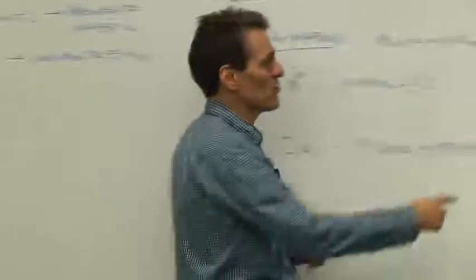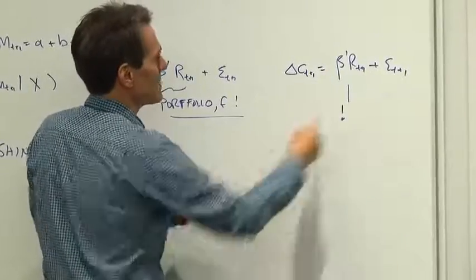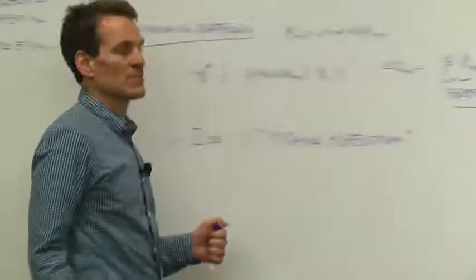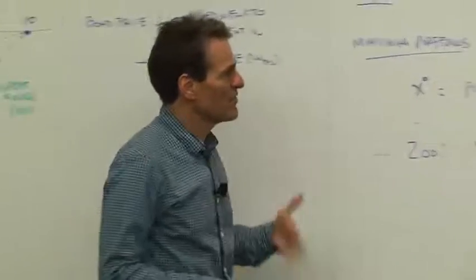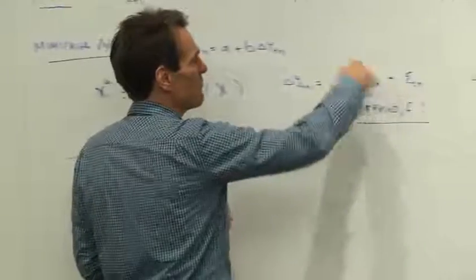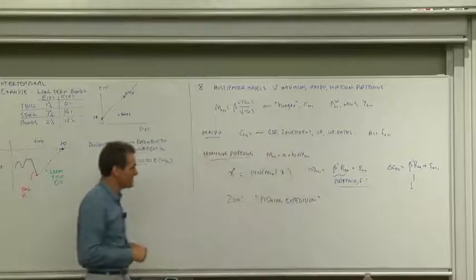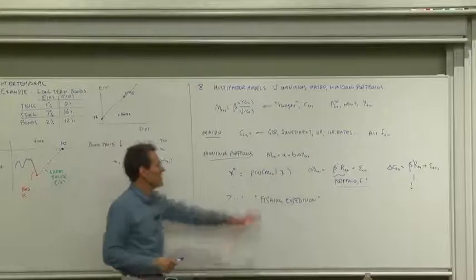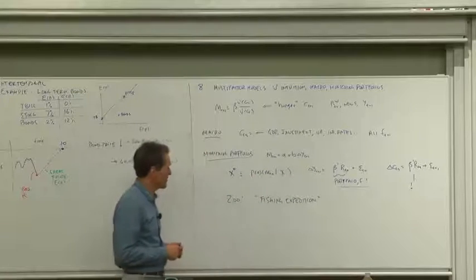Heck, you could just run consumption growth on asset returns and think about the mimicking portfolio for asset returns. People tend not to run these regressions, but they tend to invoke that theorem and say, well, maybe my asset factor is, in fact, a mimicking portfolio for some macroeconomic variable.